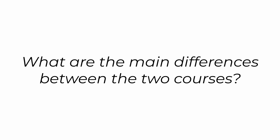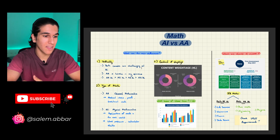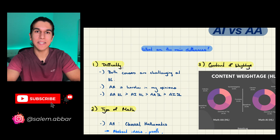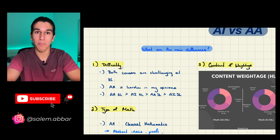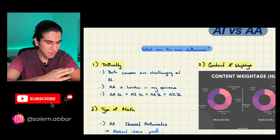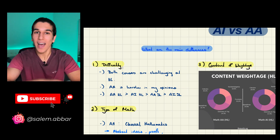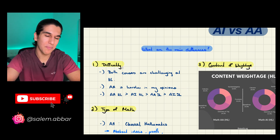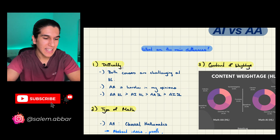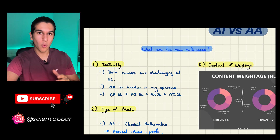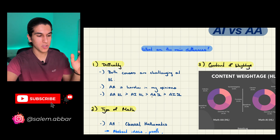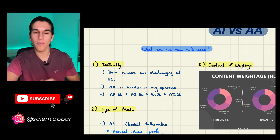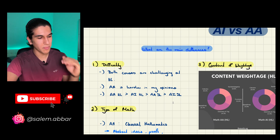The first thing we need to discuss is what are the main differences between the two courses. I've boiled it down to three: difficulty, the type of math, and then the content and weightage. Beginning with difficulty — both courses are challenging at a higher level, but in general AA is the harder course. I've made a little inequality diagram: AA HL is by far the hardest, then AI HL, then AA SL, then AI SL.